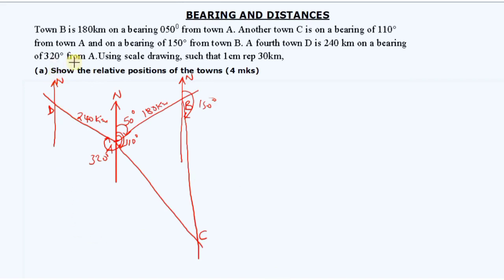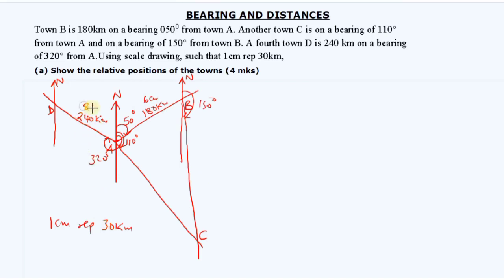We've been told to use a scale of 1 centimeter representing 30 kilometers. For 180 kilometers, this will be 6 centimeters according to our scale, and for 240 kilometers we'll have 8 centimeters. Now straight to the scale drawing — all the information we need is already in the sketch.